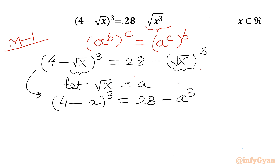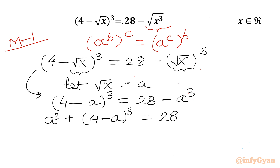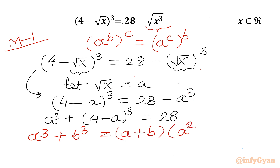Now I will add a³ to both sides, so I write a³ + (4 - a)³ = 28. I will use the a³ + b³ identity: a³ + b³ = (a + b)(a² + b² - ab).